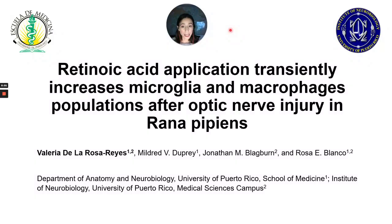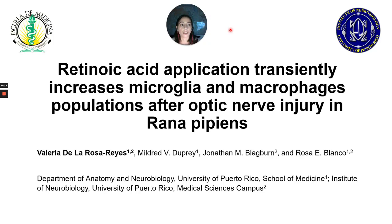Hello, everyone. My name is Valeria de la Rosa Reyes. I'm a PhD candidate from the University of Puerto Rico Medical Science Campus in the Department of Anatomy and Neurobiology, and I work with Dr. Blanco at the Institute of Neurobiology. I want to talk to you about my project entitled 'Retinoic Acid Application Transiently Increases Microglia and Macrophages Population After the Optic Nerve Injury in Rana pipiens.'